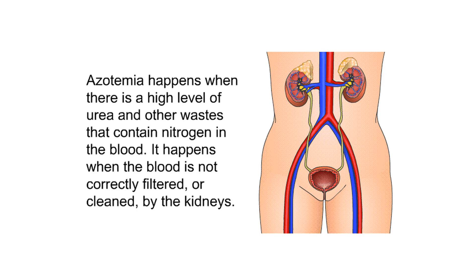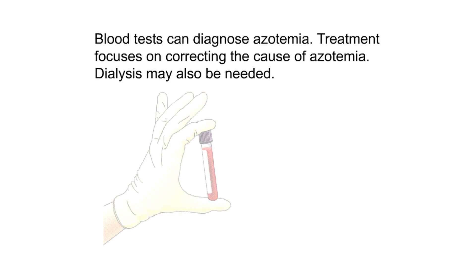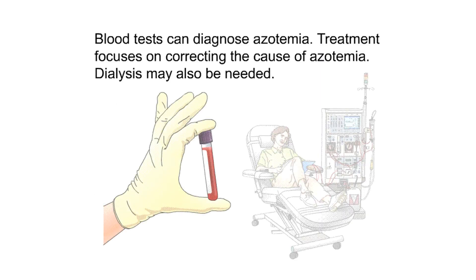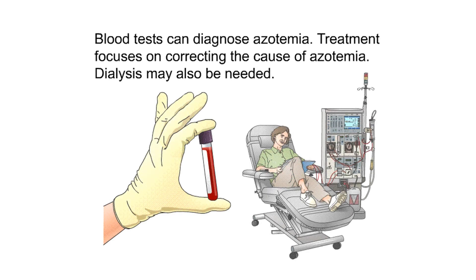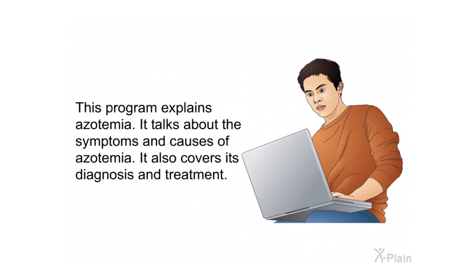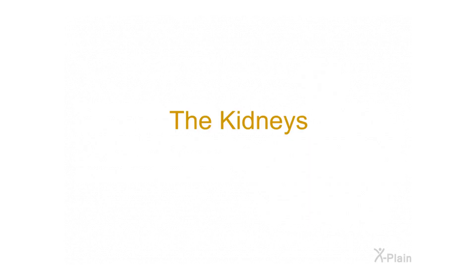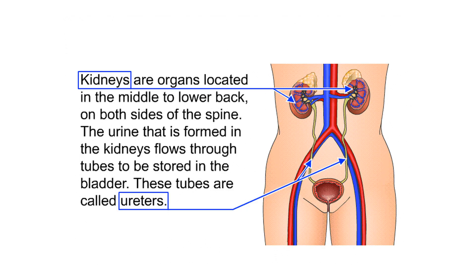Azotemia introduction. Azotemia happens when there is a high level of urea and other waste that contain nitrogen in the blood. It happens when the blood is not correctly filtered or cleaned by the kidneys. Blood tests can diagnose azotemia. Treatment focuses on correcting the cause of azotemia. Dialysis may also be needed. This program explains azotemia, its symptoms, causes, diagnosis, and treatment.